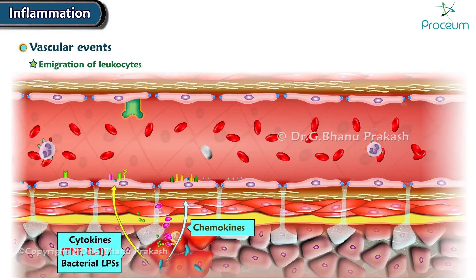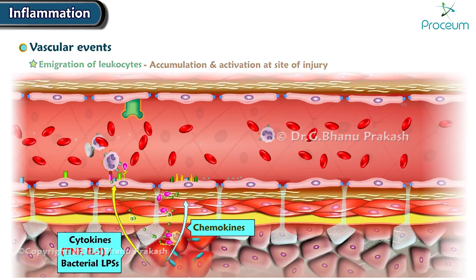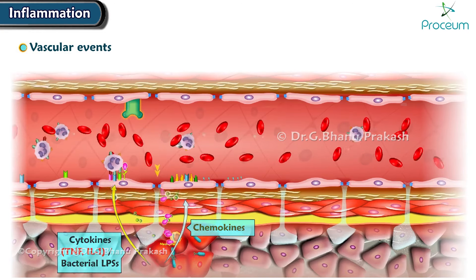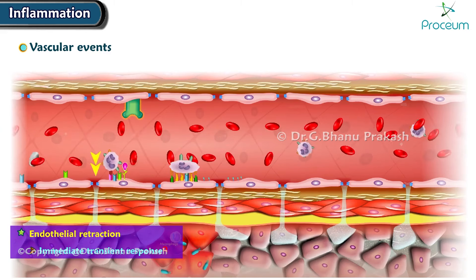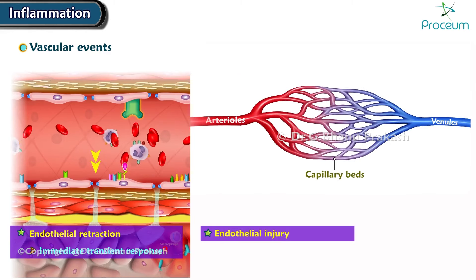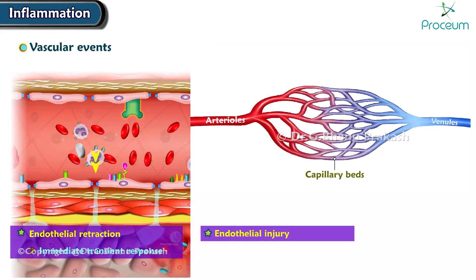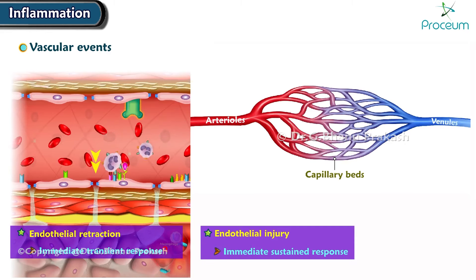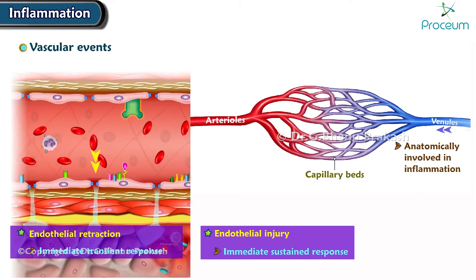The retraction of endothelial cells is the most common mechanism of vascular permeability and is known as the immediate transient response. It also results in endothelial injury in arterioles, capillaries, and venules, creating an immediate sustained response. Remember, anatomically small vessels such as venules are involved in inflammation.